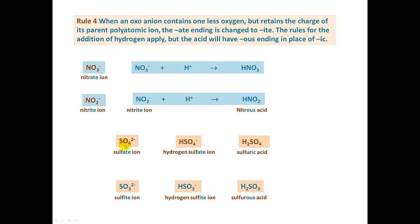Let's take a look at the sulfate ion, which you should have memorized from the table. When we add a hydrogen to the sulfate ion, it becomes the hydrogen sulfate ion. Since it's still charged, it can accept another hydrogen to become sulfuric acid. Now, the sulfite ion has the same charge as the sulfate ion but one less oxygen. It is the sulfite ion. If it accepts a hydrogen ion, it becomes the hydrogen sulfite ion, and if it accepts another hydrogen to become the acid, it becomes sulfurous acid. Notice the difference between sulfuric and sulfurous acid is one oxygen.